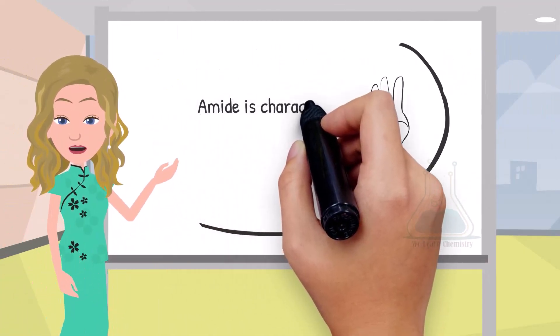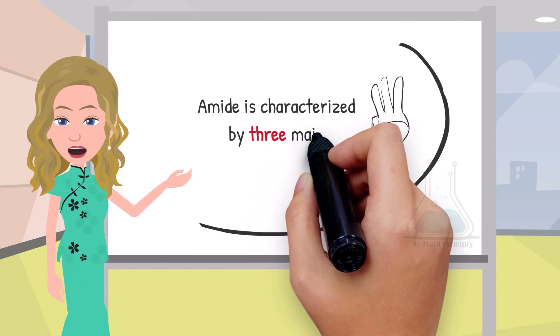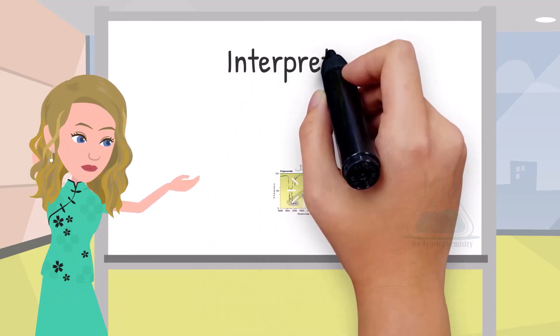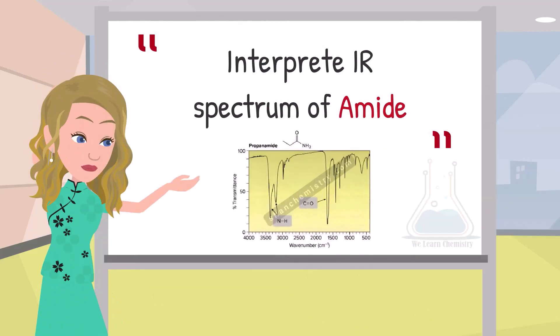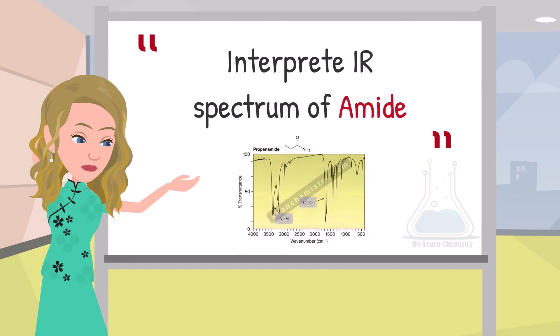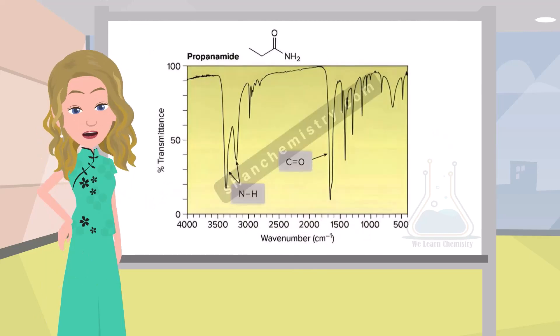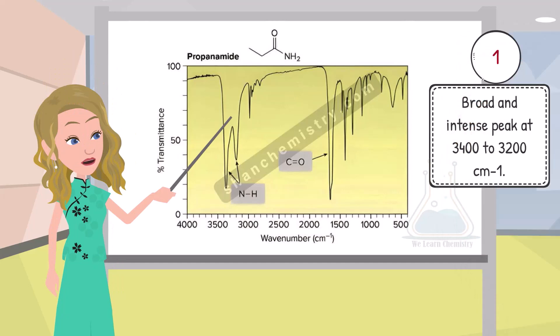The IR spectrum of amide is characterized by three main absorptions. Let us interpret the IR spectrum of propanamide, which is an amide. The amides like propanamide consist of an N-H bond. The N-H stretching peak is typically observed as